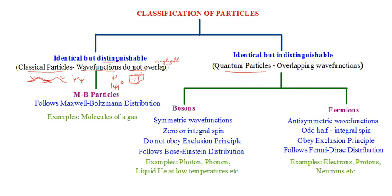These identical but distinguishable particles were studied in detail by the statistics developed by Maxwell and Boltzmann, hence they are known as Maxwell-Boltzmann particles. They follow a set of statistical rules known as the Maxwell-Boltzmann distribution law, which we'll discuss in the next session. The best example of classical particles is the molecules of a gas.